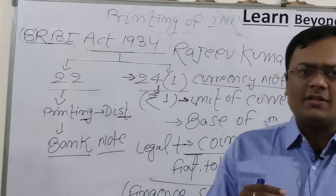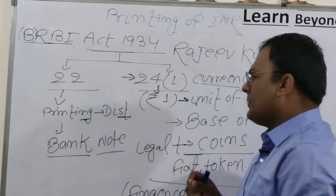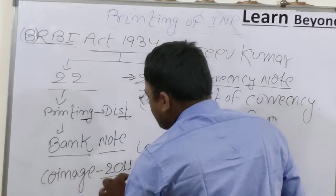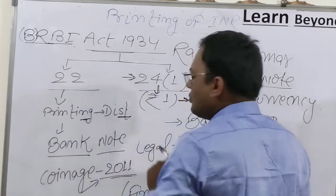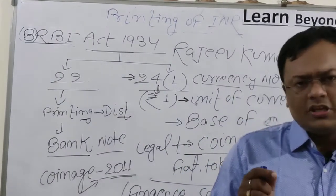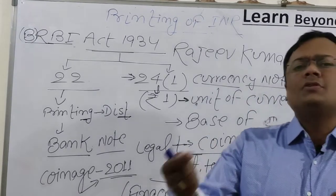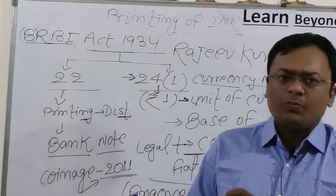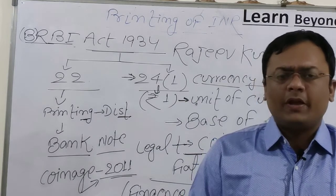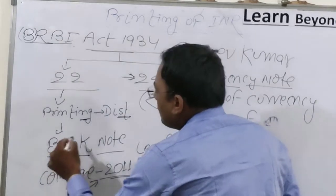The one rupee note is the base of currency and when war or proclamation comes, it is exchangeable. An important act here is the Coinage Act, which came in 1940 but was amended in 2011. The Coinage Act contains the definition of a promissory note. On any currency you take out from your wallet, it says: 'I promise to pay the bearer a sum of rupees so and so' — whether it is a 2-rupee, 1000-rupee, or 2000-rupee note.